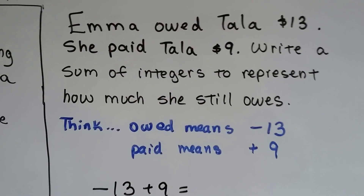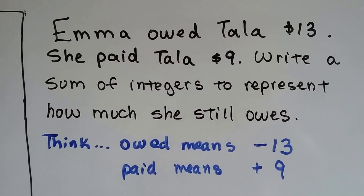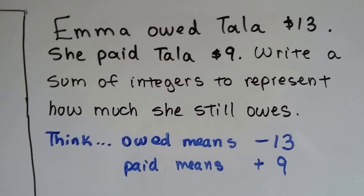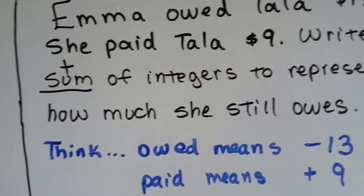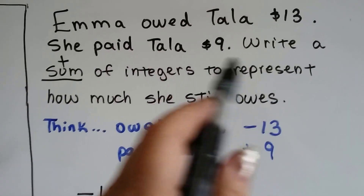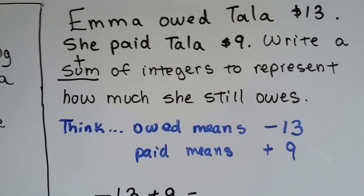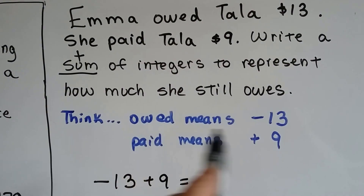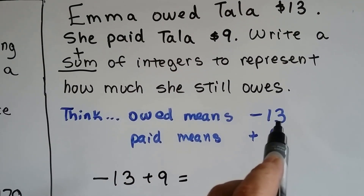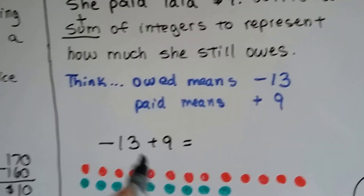Next: Emma owed Tala $13 and paid her $9. We need to write a sum of integers to represent how much she still owes — so there's a plus sign in our equation, we can't just do 13 take away 9. She owed $13, so that's minus 13 to Tala. After she paid $9, that's plus 9. So we have negative 13 plus 9.